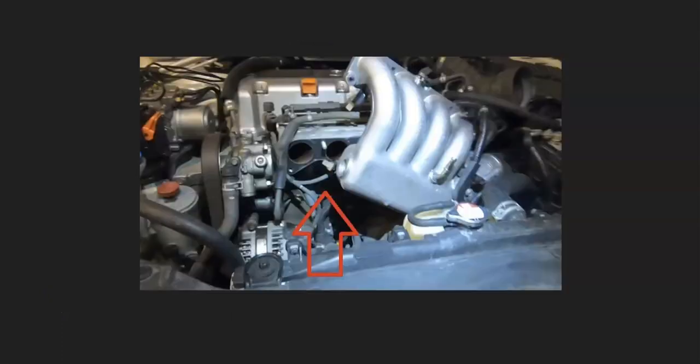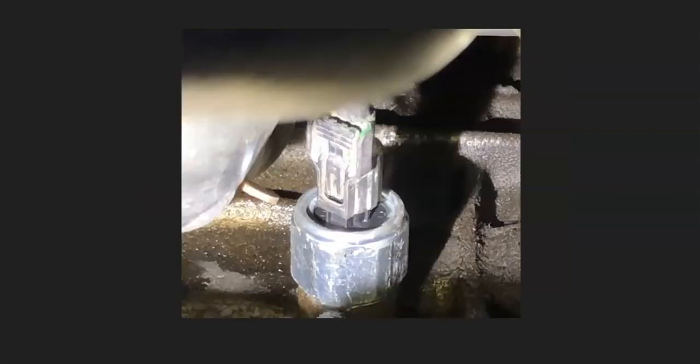They're usually fairly easy to replace, but it's going to depend on where they're located. Sometimes they can be located in some really bad spots, like underneath the intake manifold or something like that, so it's going to vary from engine to engine how difficult it is to remove and replace. But the sensor itself you usually just screw out and just screw in the new one and attach the wiring and you'd be good to go.